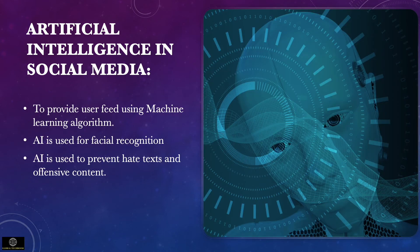Today, social media has become our identity. We are generating an immeasurable amount of data through chats, posts, tweets, and so on. Applied AI and machine learning are always present when dealing with an abundance of data. AI is used for facial recognition to detect faces for security purposes. Social media users can get their feed tailored to their interests using machine learning algorithms. AI on Twitter is used to identify hate speech and terrorist language in tweets, and can also filter out offensive content.